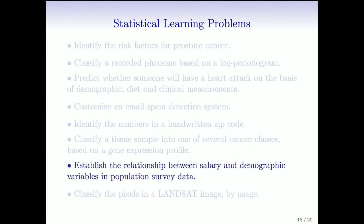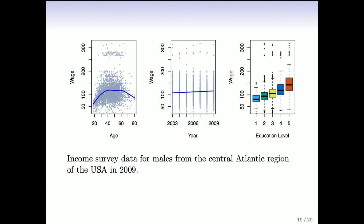Establish the relationship between salary and demographic variables in population survey data. Here's some survey data — income from the central Atlantic region of the USA in 2009. You see what you might expect: as a function of age, income initially goes up, then levels off, and then finally goes down as people get older. Incomes gradually increase with year as the cost of living increases, and incomes change with education level — that's the right-hand plot with box plots. The goal is to use regression models to understand the roles of these variables together and see if there are interactions.